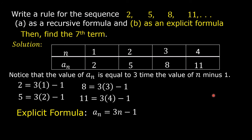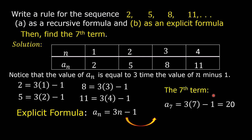Using this explicit formula, we can find the 7th term even without knowing the preceding term. If we replace n by 7, we have a sub 7 equals 3 times 7 minus 1, which equals 20. So, the 7th term is 20.